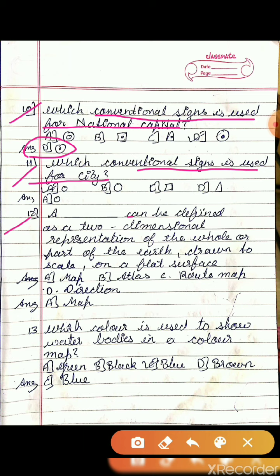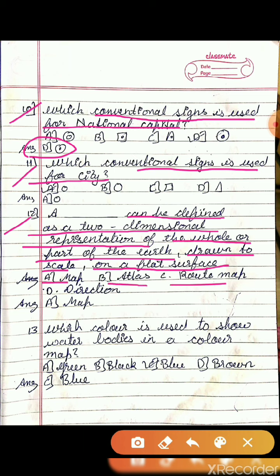Question 12: A map can be defined as a two-dimensional representation of the whole or part of the earth drawn to scale on a flat surface. Option A is map, option B is atlas, option C is route map, option D is direction. The answer is A, map.